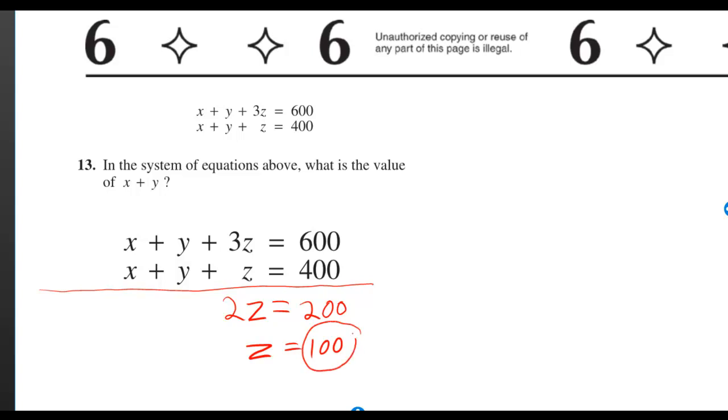But now that I know z is equal to 100, I can substitute that where I see the z in the bottom equation. And that gives me x plus y plus 100 is equal to 400.